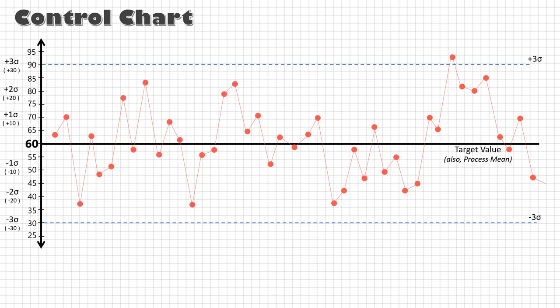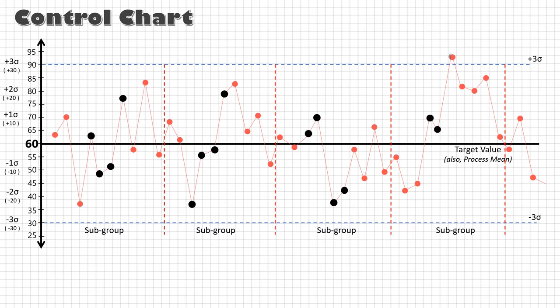So in our process, let's break this timeline into subgroups and take samples from each subgroup. Now these samples should exhibit similar properties to that of the entire population.